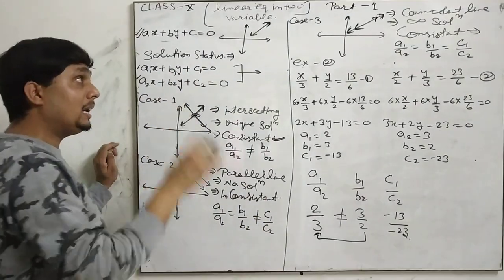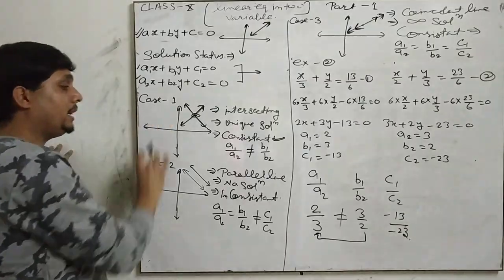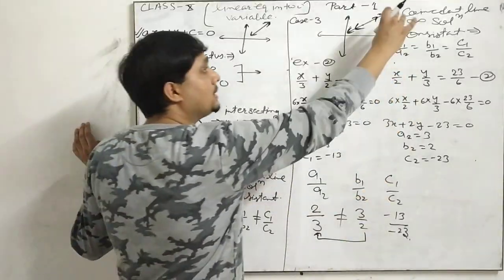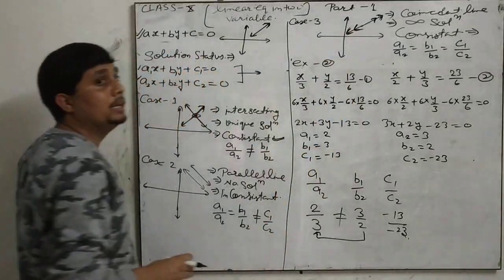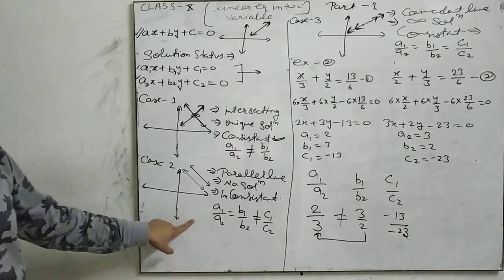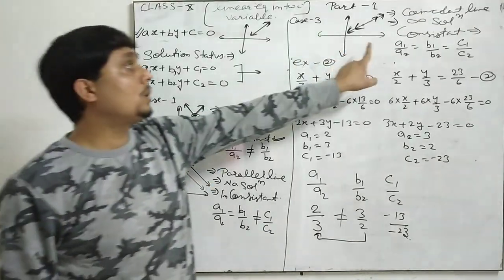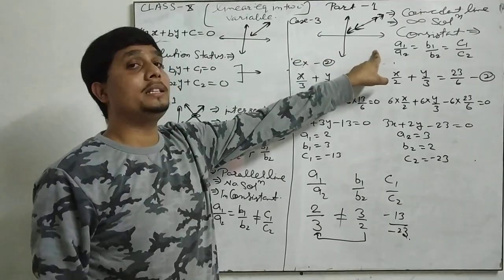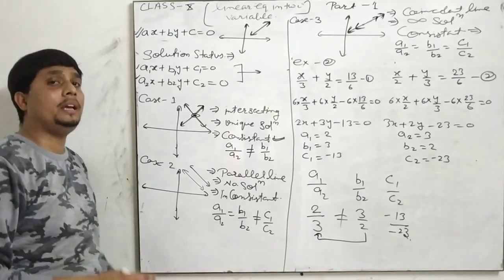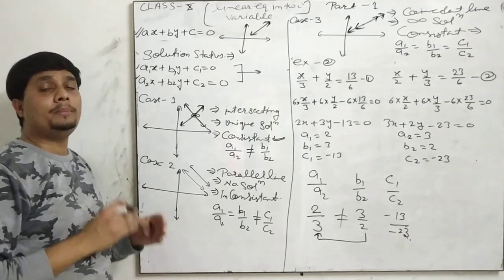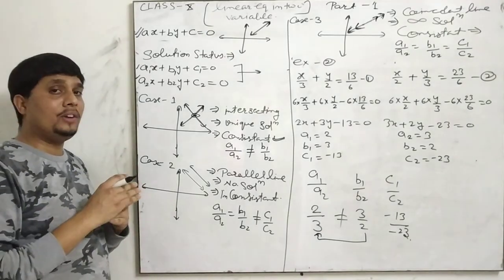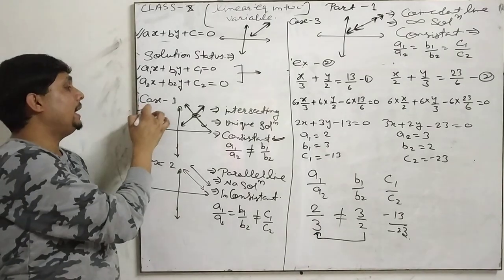We can directly see whether it is an intersecting, parallel, or coincident line. If it is a parallel or coincident line, we can find solutions using other methods. For intersecting lines, those methods will be covered in the next video. Thank you.